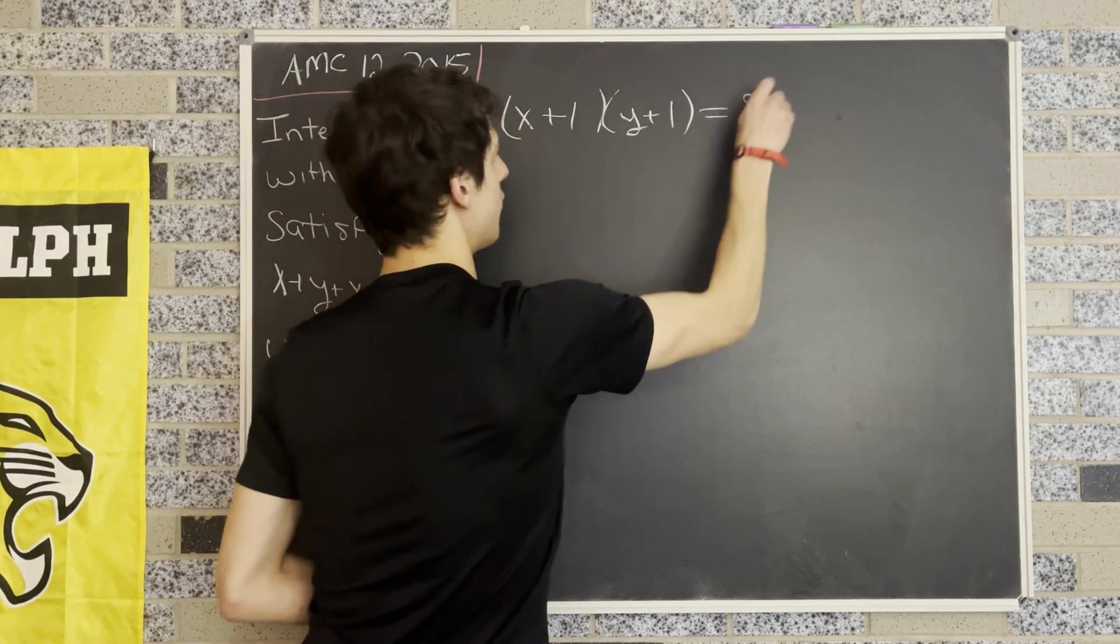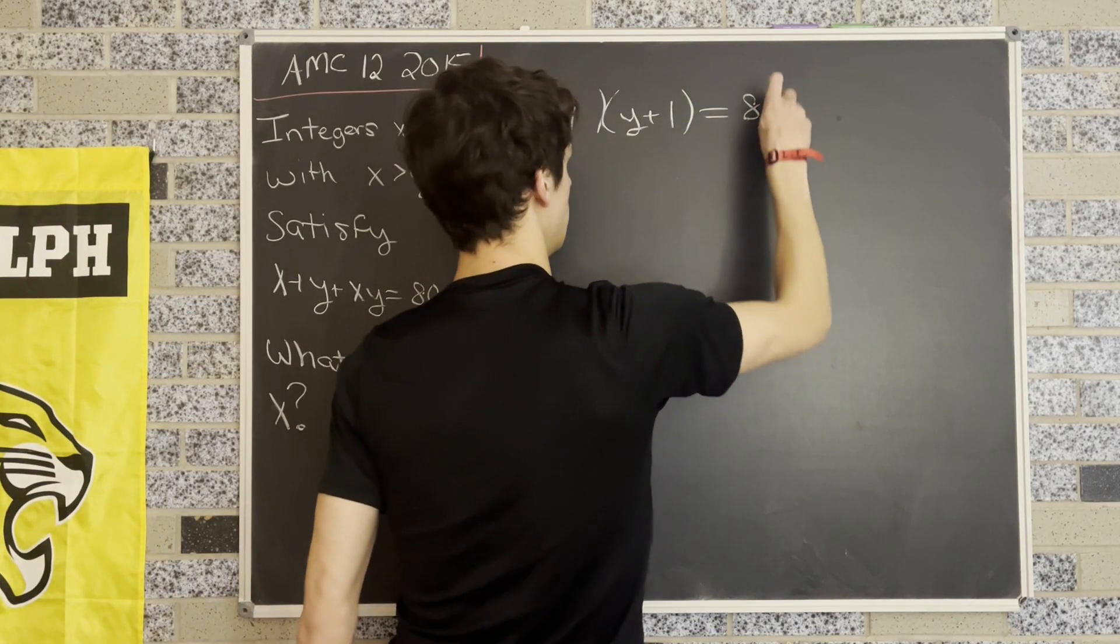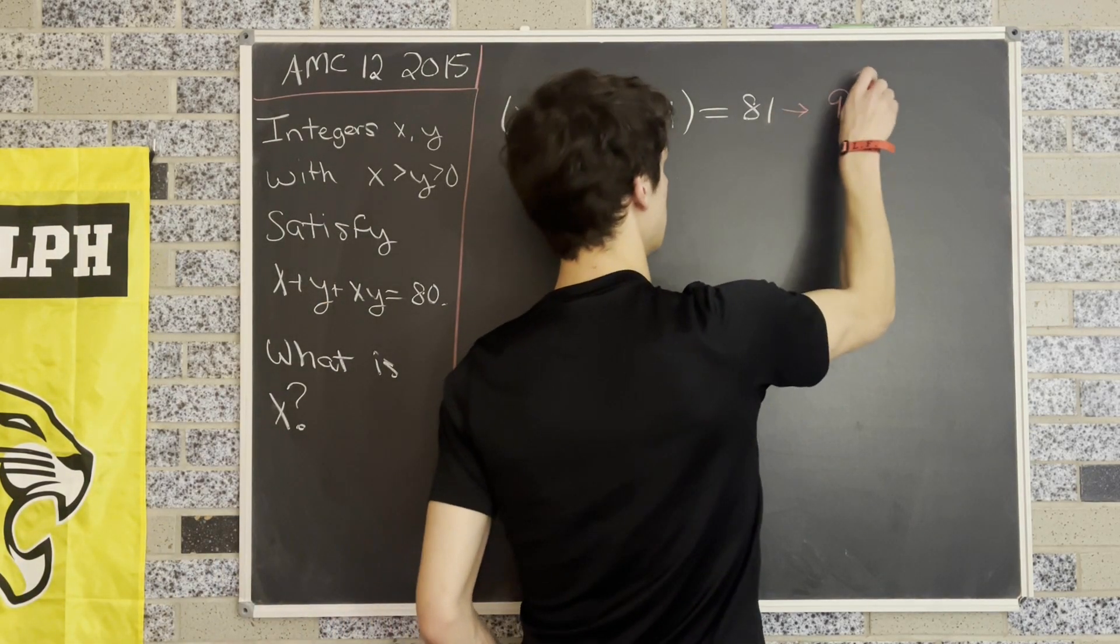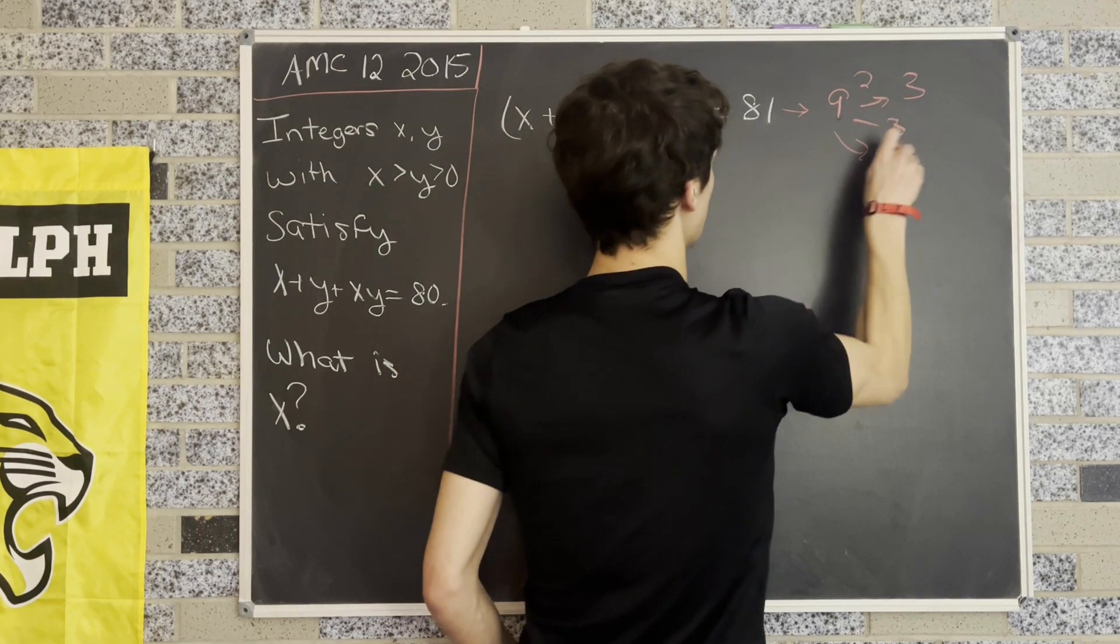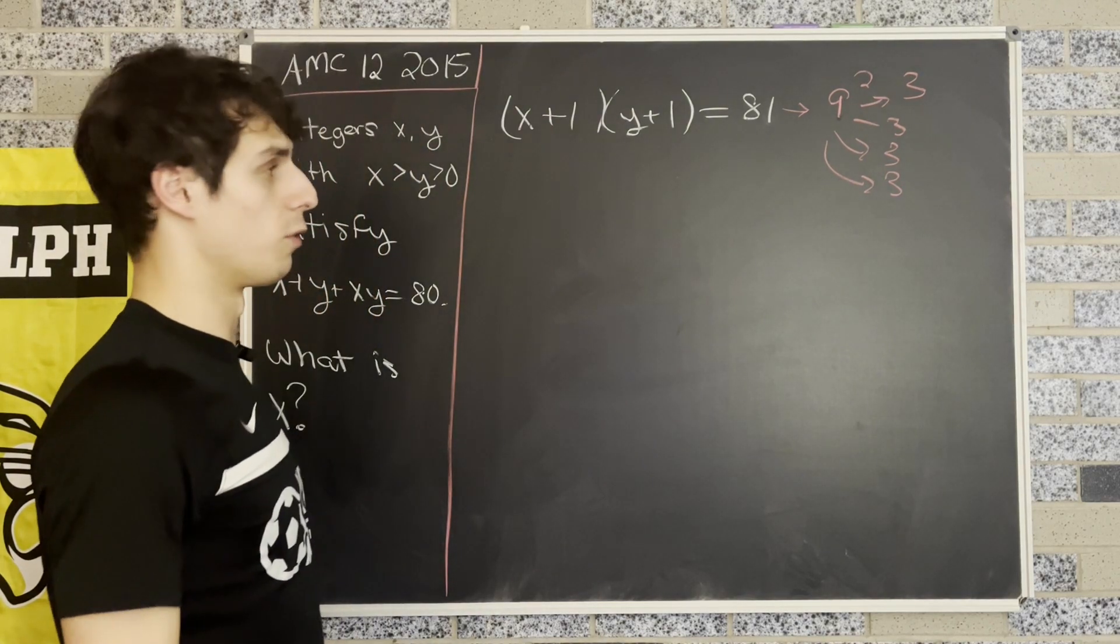But notice that we left out this 1 times 1 term here. So this is actually equal to 81. But now what we can do is we can factor 81. And the thing about 81 is it has a very nice prime factorization where it splits into four copies of 3, or 3 to the fourth power.